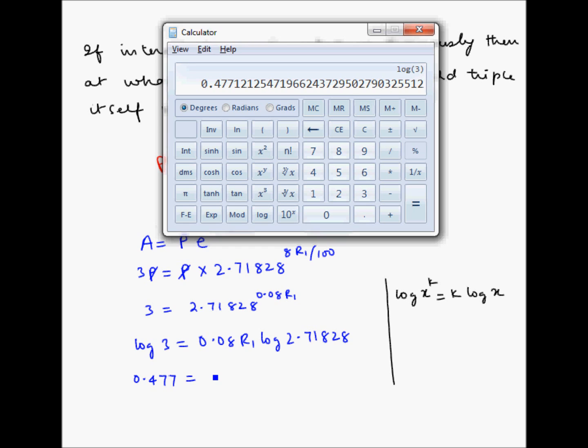Now we have to find log 2.71828, so this becomes 0.08 R1 multiplied by 0.434. We have to multiply this by 0.08, so this becomes 0.0347. So 0.477 is equal to 0.0347 R1.